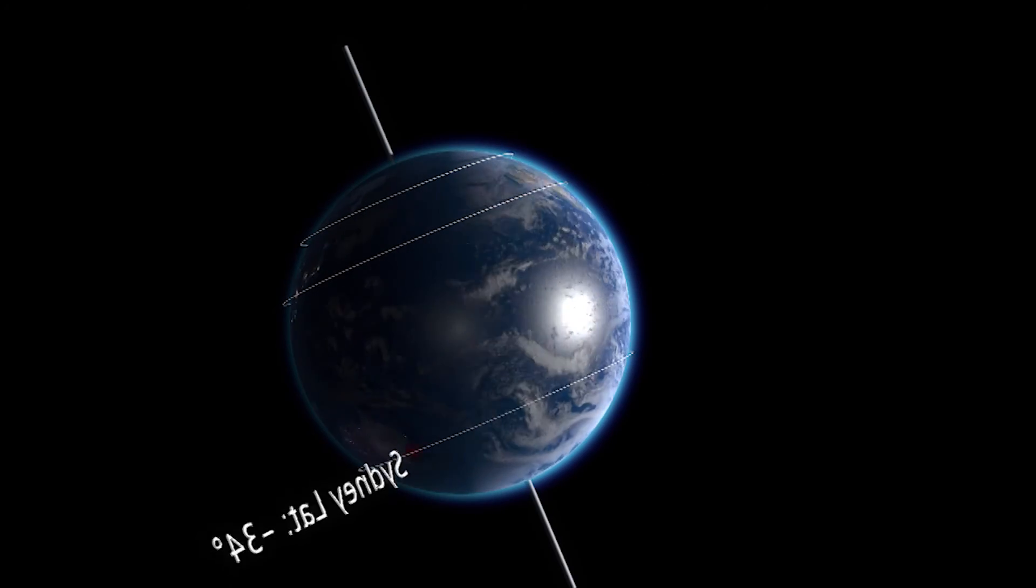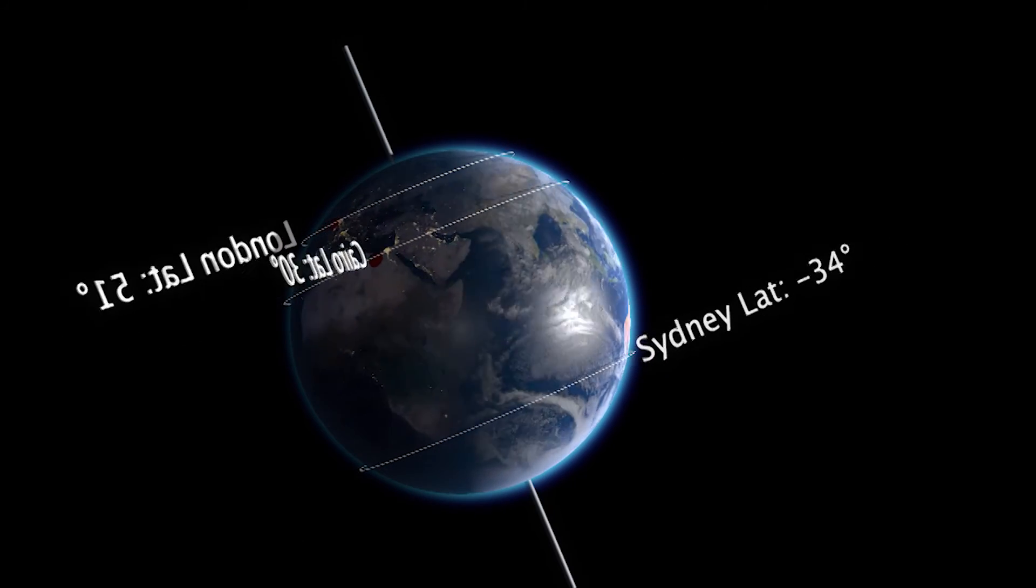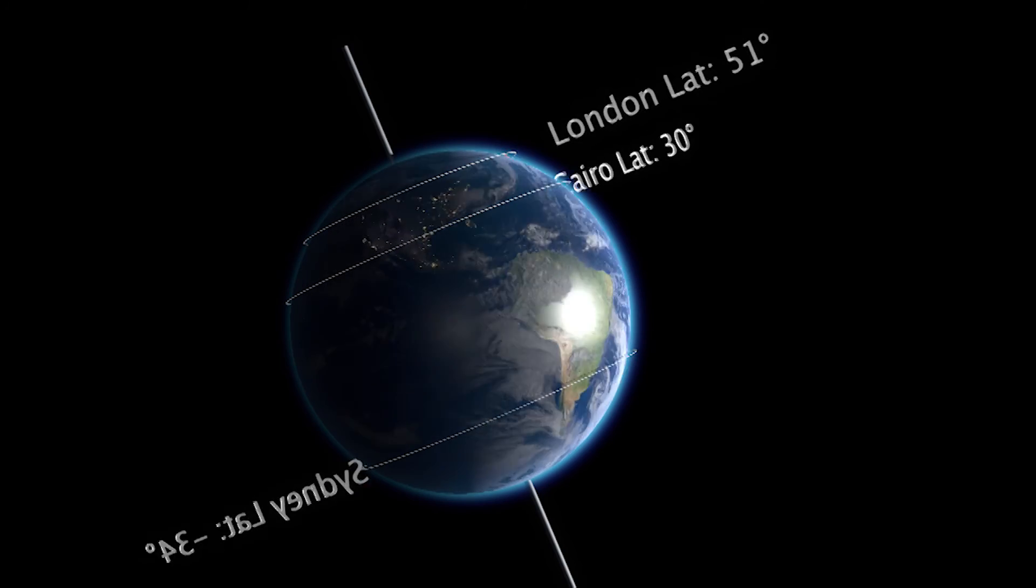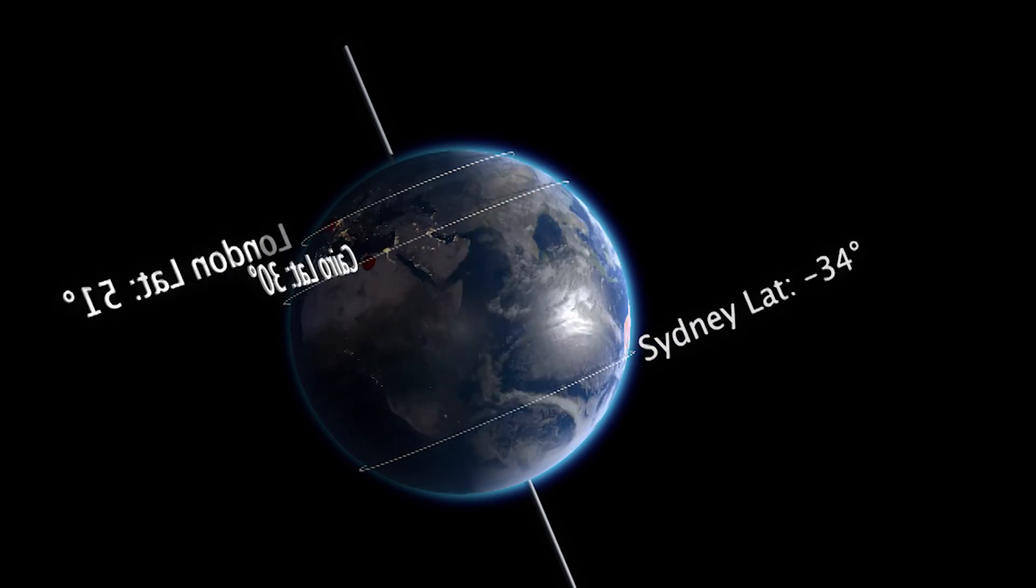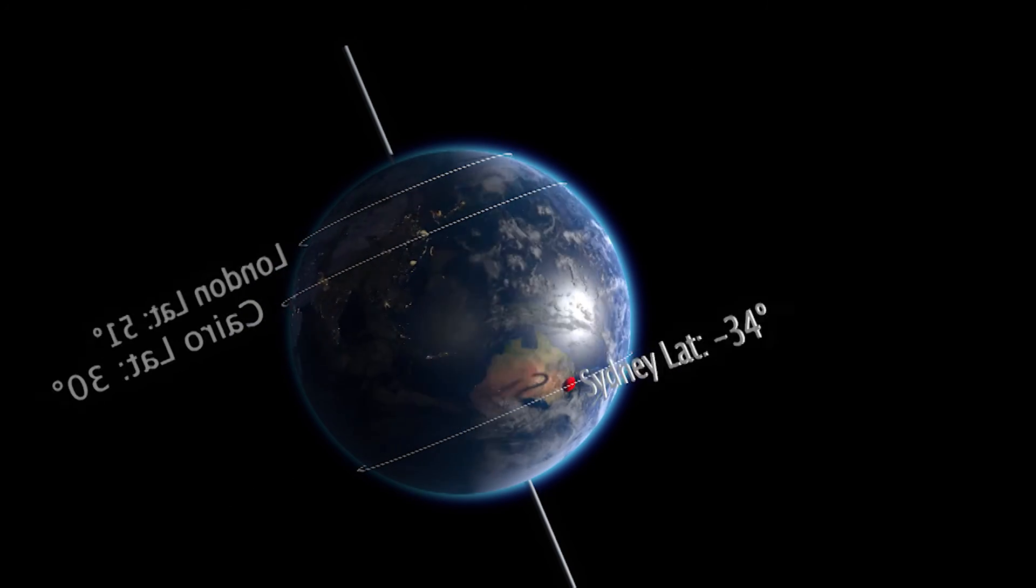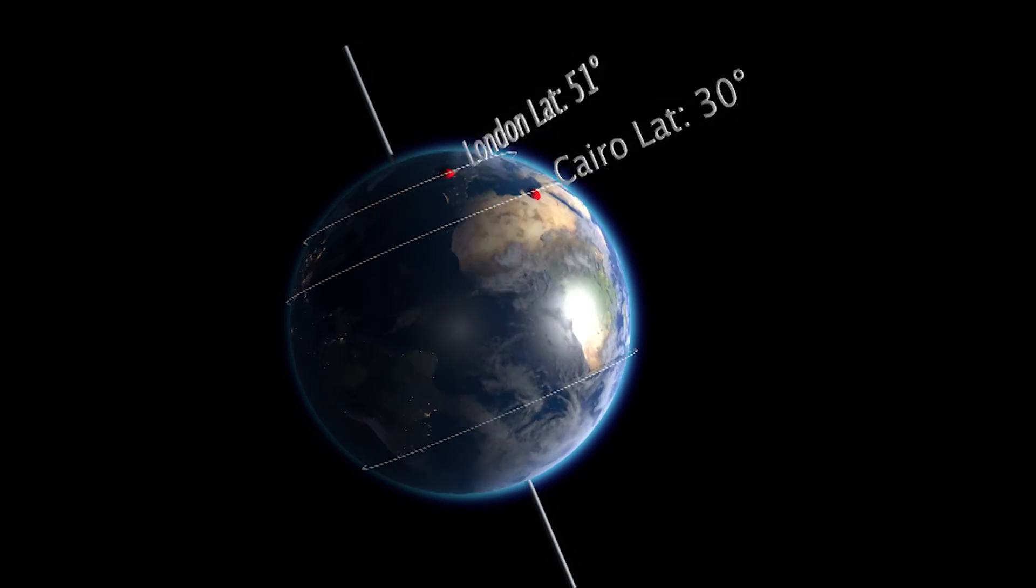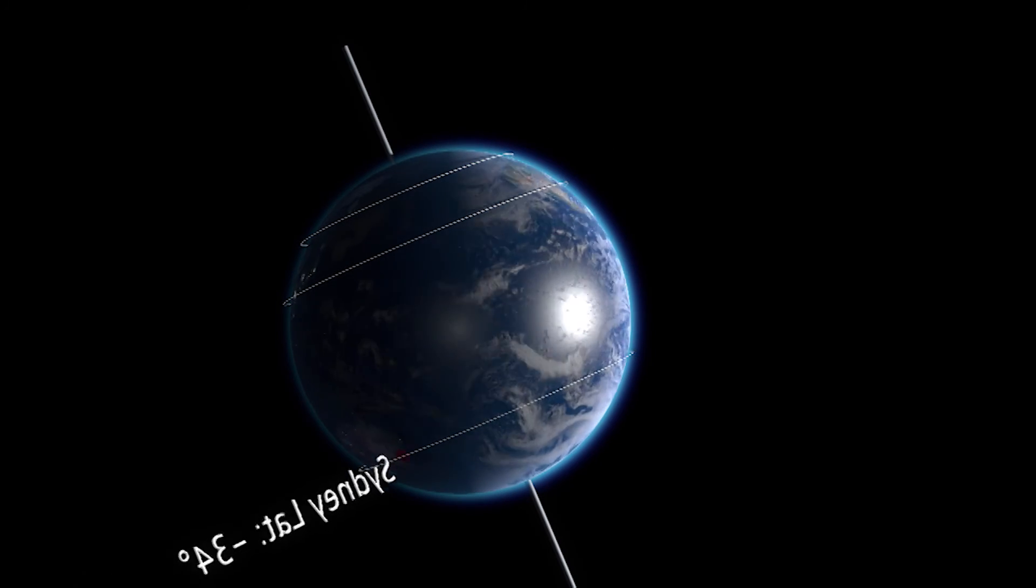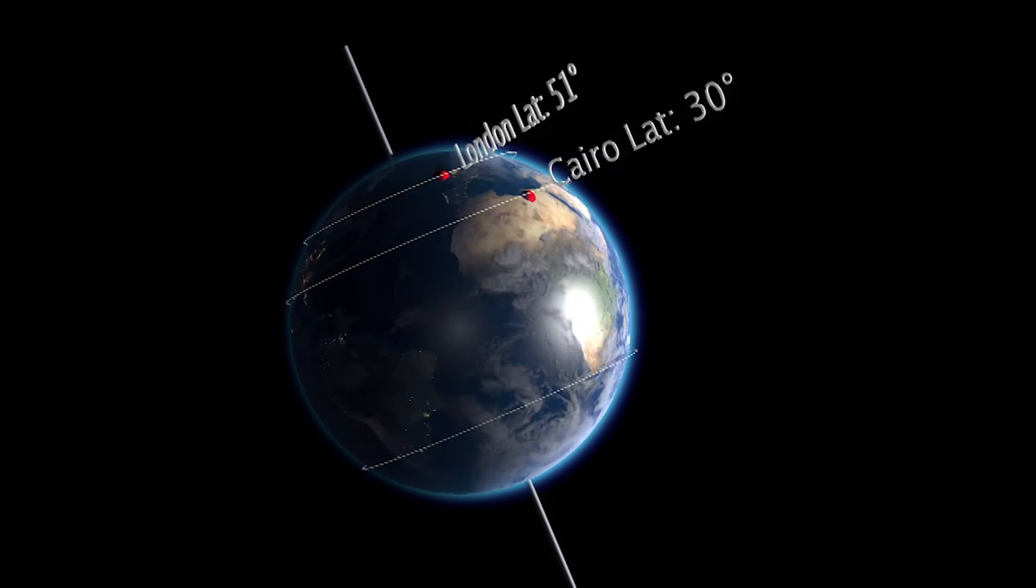Here we see various places marked along with their latitudes on the globe. Depending on the latitude of the place, a panel tracking the sun will have to go through a range of tilt angles throughout the year. Let's see how a sun tracking PV panel is working in different places around the earth.